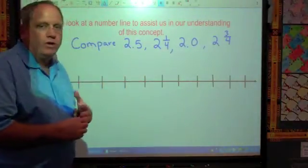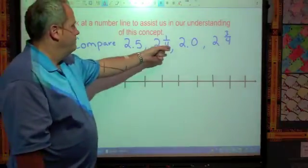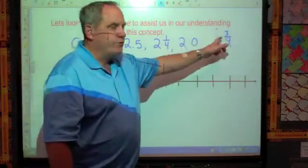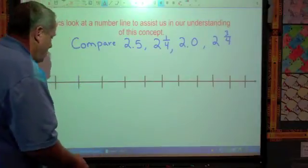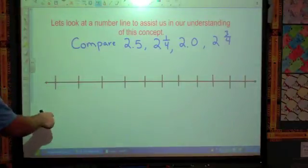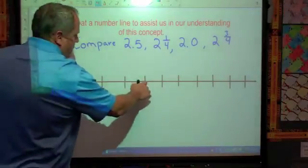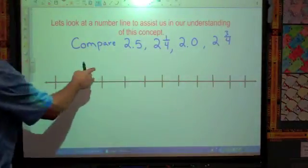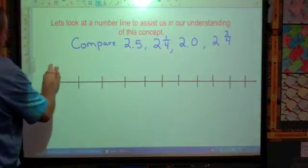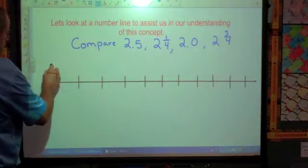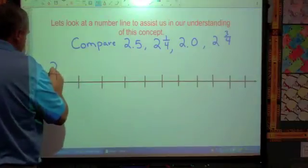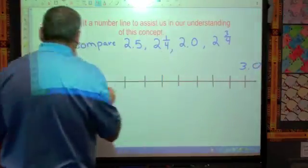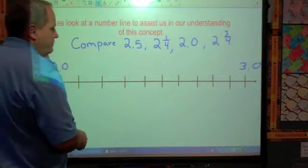Now, if you know your decimal equivalents to one fourth and three fourths, this problem becomes very easy. First thing we need to do though is let's go ahead and look at our number line here. We notice that we have 1, 2, 3, 4, 5, 6, 7, 8, 9, 10, 11 spaces going across. So we've got 2.0 is the lowest one, so let's go ahead and label this one as two, okay? And we'll label this one down here as three.